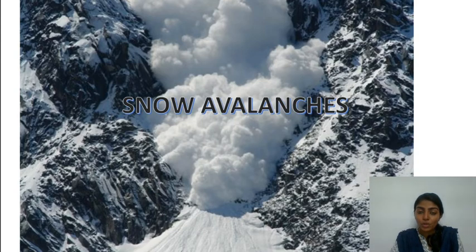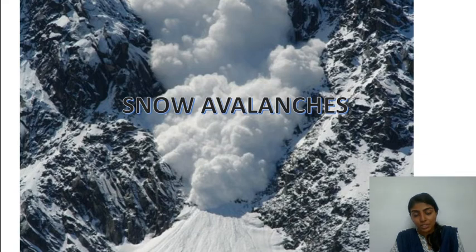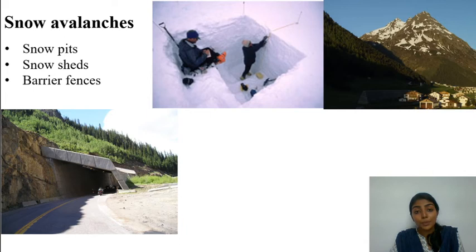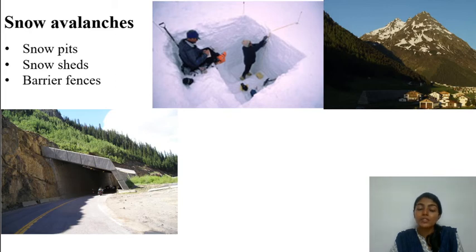The most powerful snow avalanches occur in parts of the Himalayas, especially during summer. Mitigation measures include deliberately conducting controlled avalanches, and researchers digging snow pits to analyze the snow layers to determine the strength and capability of the snow pack. Other measures include snow sheds and barrier fences, which can divert the movement of snow and reduce the risk.